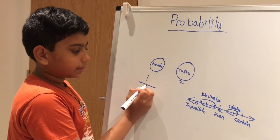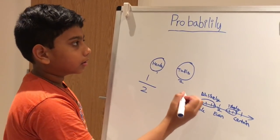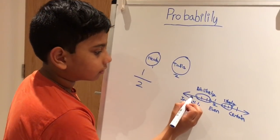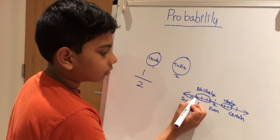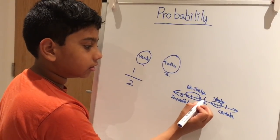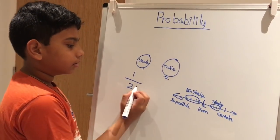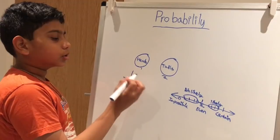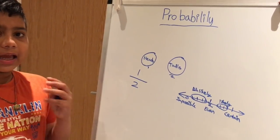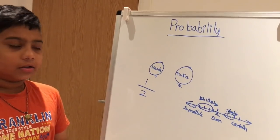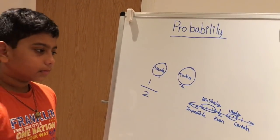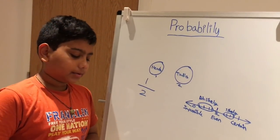So let's place one over two on the probability line. We have zero here and one here, and one over two sits right in the middle, which is even. So to get heads, the probability is even — we have an equal chance to get heads or tails.